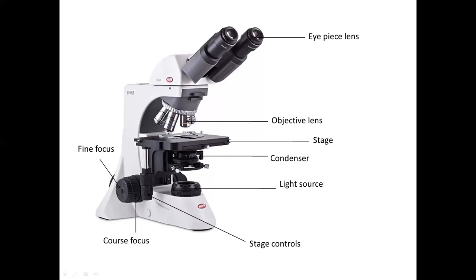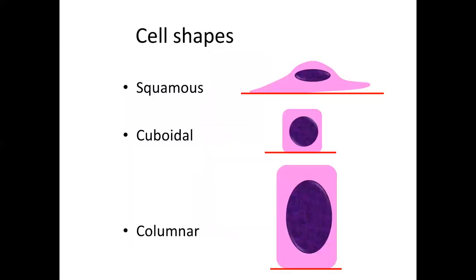Now we move on to the cell part of this practical. All epithelial cells have three shapes: squamous, cuboidal, and columnar. In the squamous type, you have small amounts of cytoplasm and they look like a squame when cut perpendicular to the basement membrane. The nucleus is flattened out and parallel to the basement membrane.